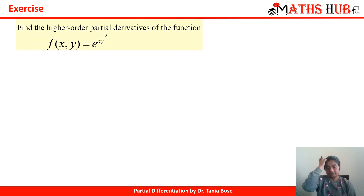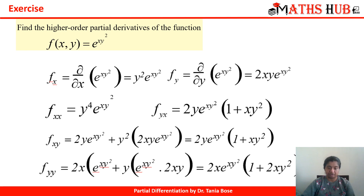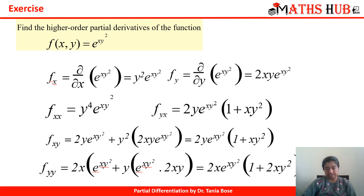Let us try another question: find the higher order partial derivatives for a function f(x, y). Here higher order means we calculate at least the first and second order derivatives. fx = y² · e^(xy²), and fy = 2xy · e^(xy²). From these we can find fₓₓ, fᵧₓ, fₓᵧ, and fᵧᵧ. Try performing these on your own and check your answers.